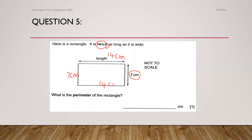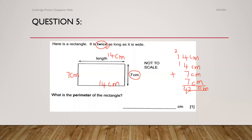Perimeter means you have to add all four sides. 14 plus 14 is 28, then 7 plus 7 is 14. So I have to add 14 plus 14 plus 7 plus 7. When you add, you will get the perimeter — I have taken my two lengths and two widths. Adding them gives 42 centimeters. So according to this rectangle, the perimeter is 42 centimeters.